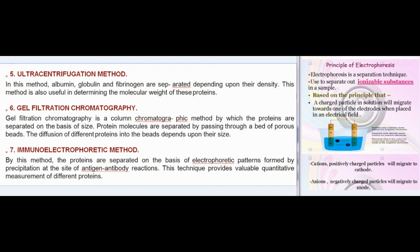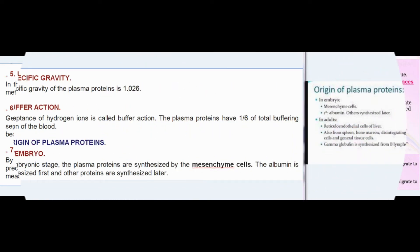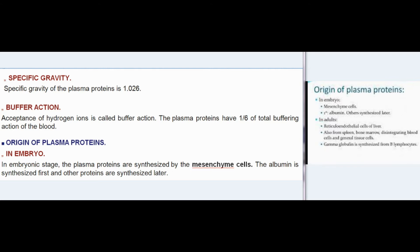(6) Gel filtration chromatography: A column chromatographic method by which proteins are separated on the basis of size. Protein molecules are separated by passing through a bed of porous beads; diffusion into the beads depends upon their size. (7) Immunoelectrophoretic method: Proteins are separated based on electrophoretic patterns formed by precipitation at sites of antigen-antibody reactions, providing valuable quantitative measurement of different proteins.